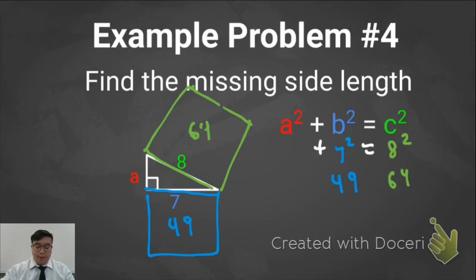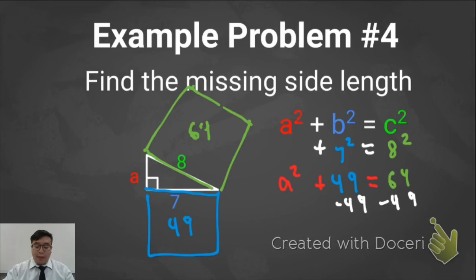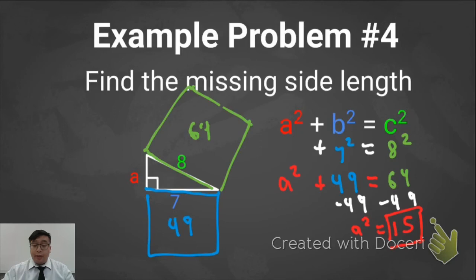The Pythagorean Theorem says A squared plus B squared equals C squared. So 49 plus A squared is going to equal 64. Another way to think about this is subtraction: take 64 and subtract 49, and what's left is the area of A squared. 64 minus 49 is 15, so A squared has an area of 15. I want the side length, so the square root of 15 equals A, and I'll leave my answer as exact.